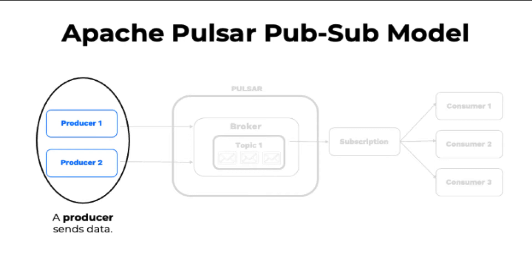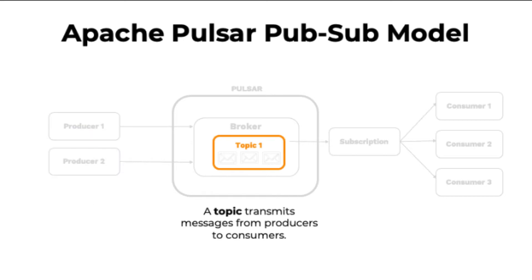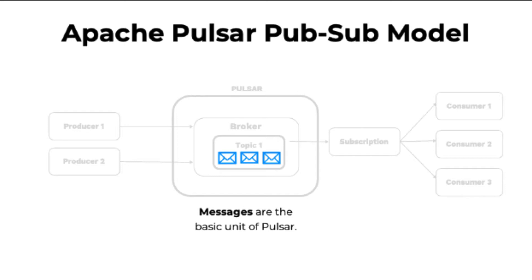In software, a producer is a process that attaches to a topic and sends data. A topic is a named channel for transmitting messages from producers to consumers. All data is sent and received on topics. Messages are the basic unit of Pulsar. Messages are stored in topics, and producers send their messages to a given topic while consumers receive messages from topics.